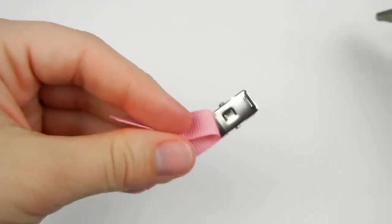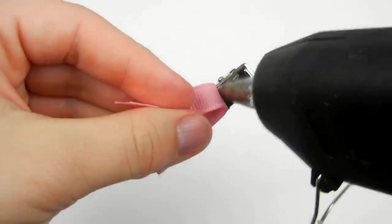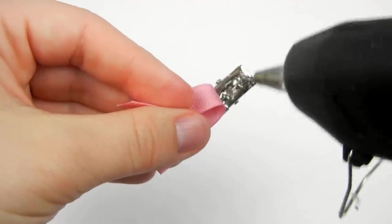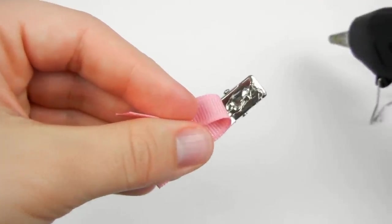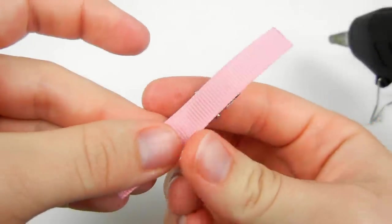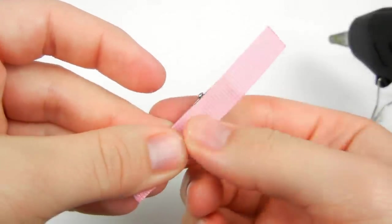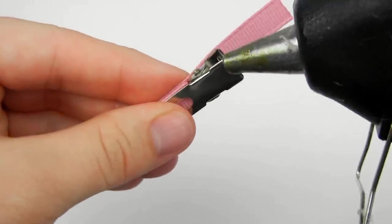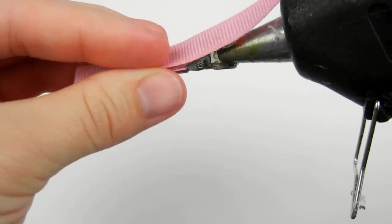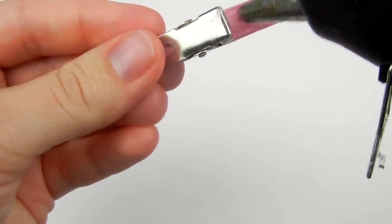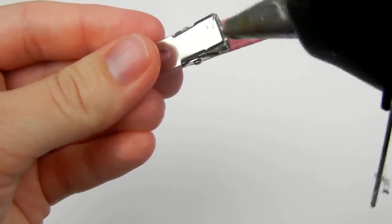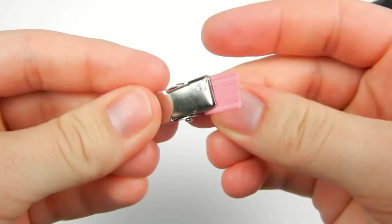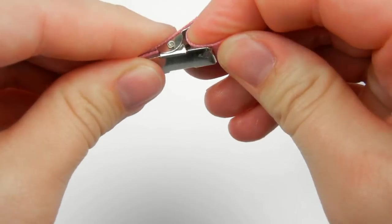Go ahead and put a little bit more glue on the clip right here. Put a little bit of glue on the inside of the clip. Put a little bit of glue on the end of your ribbon.